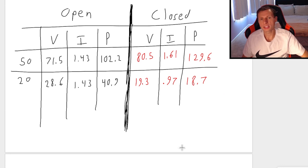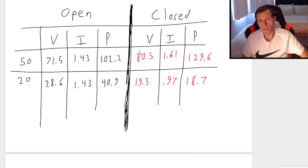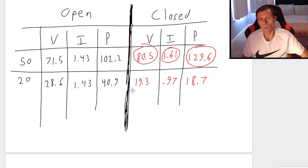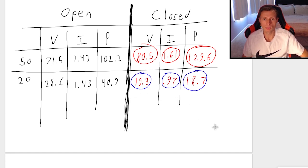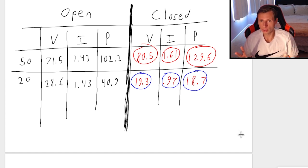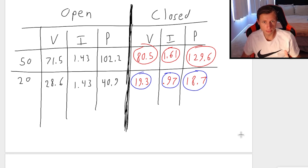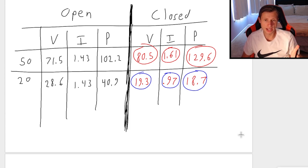Now we can see exactly what happened to every value. Voltage increased, current increased, and power increased — all of them increased for the 50 ohm. While the exact opposite happened for the 20 ohm: voltage decreased, current decreased, and power decreased. This is the long way of doing it, and it's the way I would do it on the test unless I was really strapped for time. Your answer would just be the word increase or decrease, unless they ask for the actual numbers.